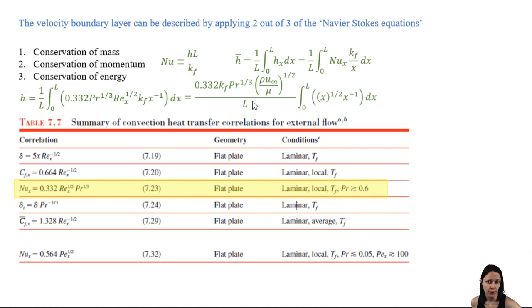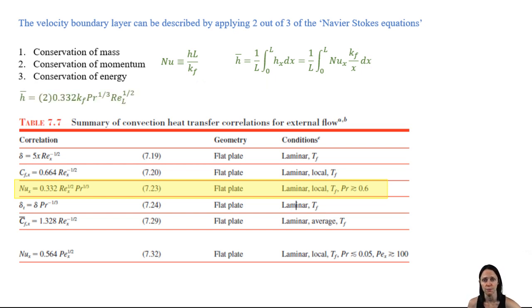We integrate that big long equation with respect to x. A lot of things come out of the integral and we see that all we really need to integrate is x raised to the negative 1/2. And integrating that, in this case from x equals 0 to x equals L, we get our average heat transfer coefficient and we can combine the density, viscosity, u infinity, and L terms to get things in terms of that Reynolds number. And plugging that into our equation for the average Nusselt number, we get our final heat transfer correlation for laminar external flow on our equation sheet.